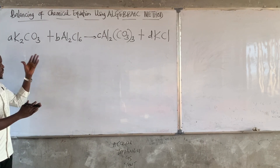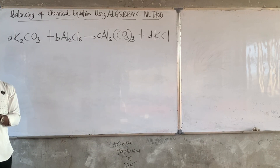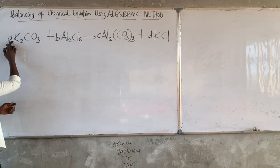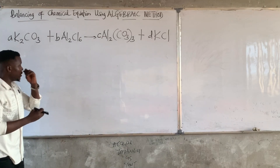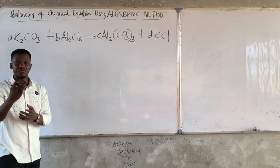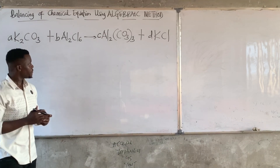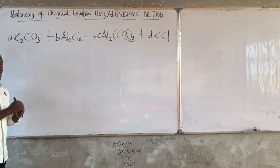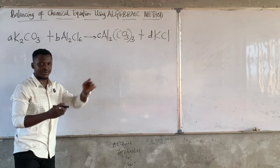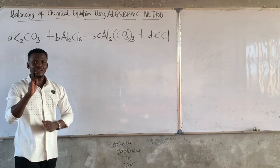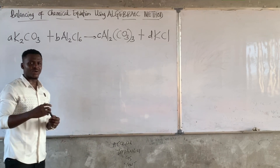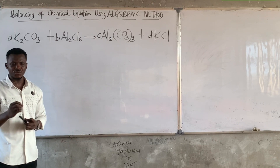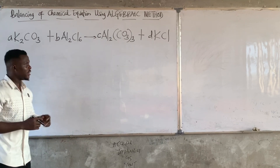We do not know what the coefficients are, so they are unknown coefficients which we are going to solve for afterwards. The first step is to assign unknown coefficients, which we have now done. The next step is for us to write a balanced chemical equation for each of the elements.